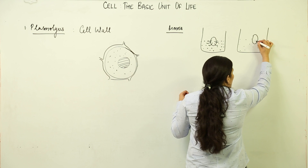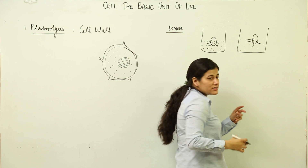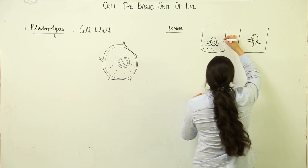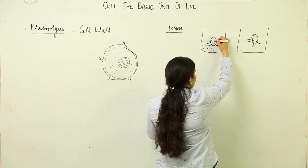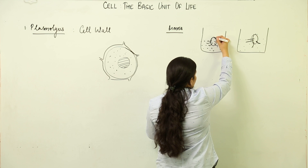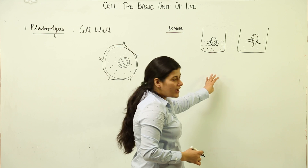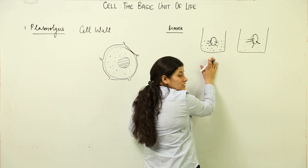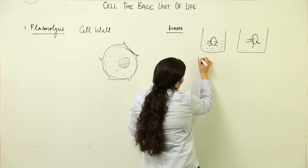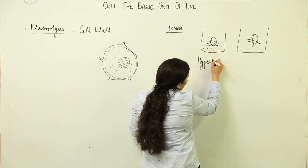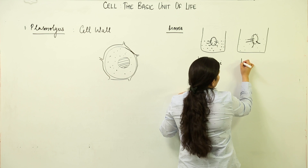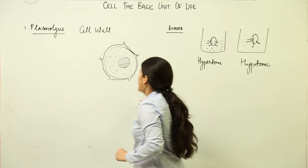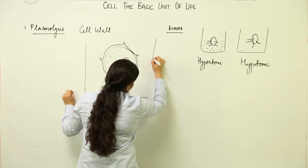In the opposite condition, when the shell-less egg is placed in a lower concentration solution, the water in the solution moves towards the egg and the egg's size increases. The solution that is more concentrated with respect to the egg is called a hypertonic solution. The other case — where the solution is less concentrated — is the hypotonic solution. Remember these two terms.